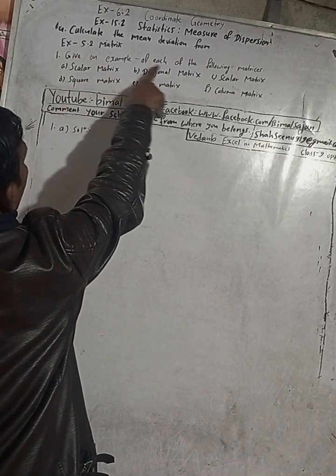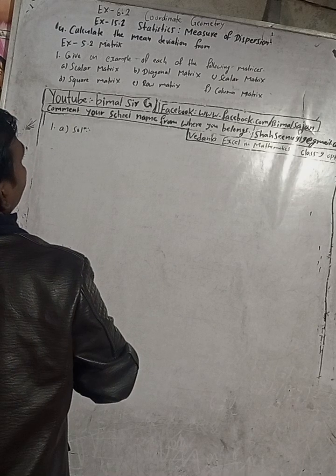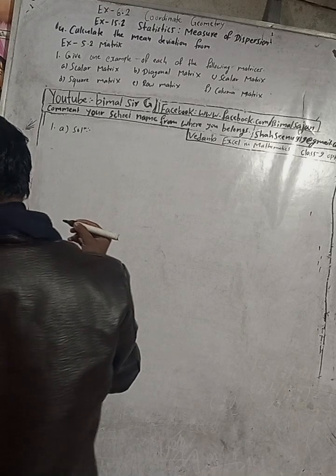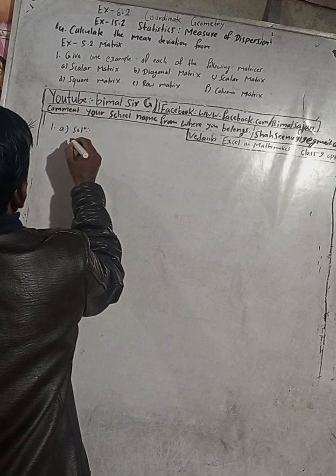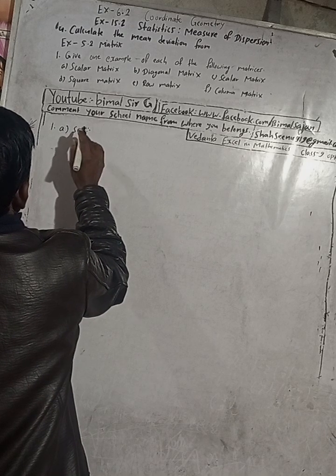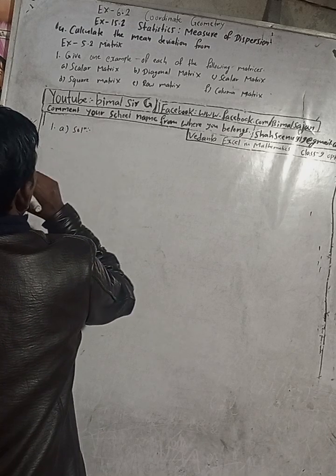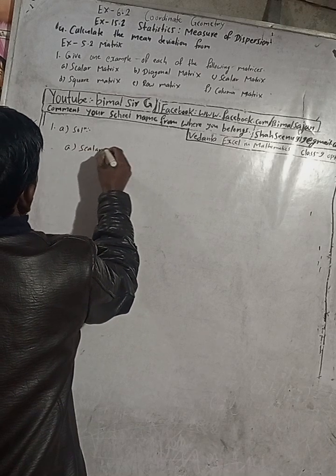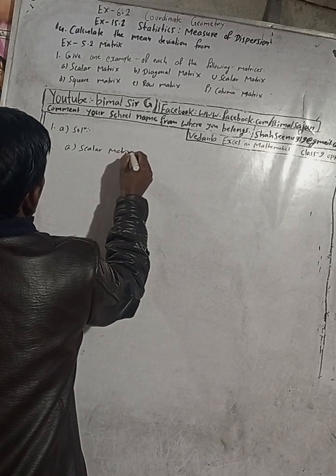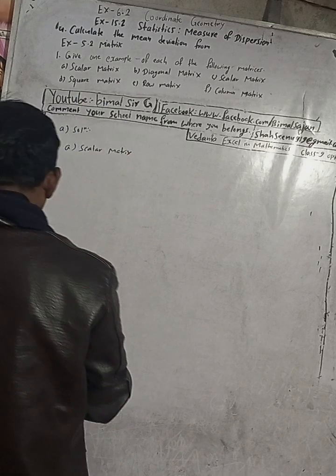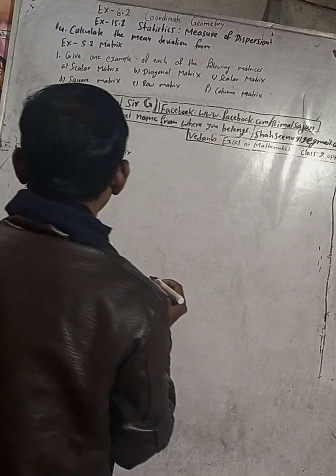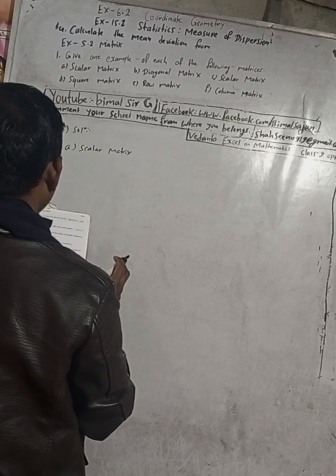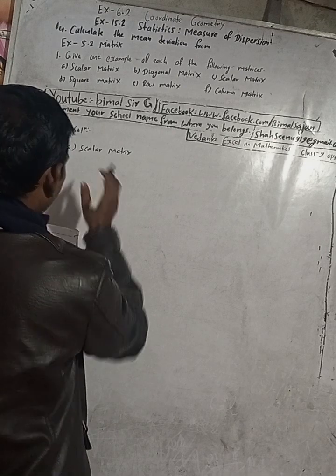The question is: give one example of each of the following matrices. There may be only one example of each. So first is a scalar matrix. First of all, you should know what a scalar matrix means. A scalar matrix is a matrix in which all the elements in the leading or principal diagonal are equal.